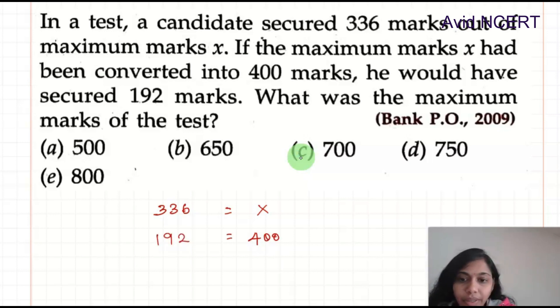From this, we know that when 336 is decreased to 192, this x value would have also been more than 400. 336 will not be out of 400 because for 400 it is just 192. Therefore, x should be more than 400.